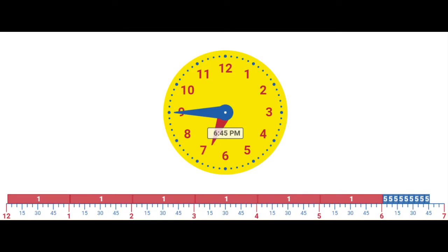In this section of the second grade measuring length and time unit, students will read and write time to the nearest one minute increment using analog and digital clocks and distinguish between AM and PM. In first grade, students were expected to tell time to the hour and half hour. Materials include geared clocks, model clocks, and linking cubes.